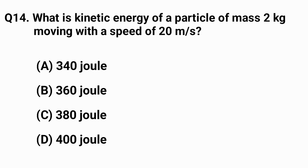Question number fourteen: what is the kinetic energy of a particle of mass 2 kg moving at a speed of 20 meters per second? The right answer is option D — 400 joules.